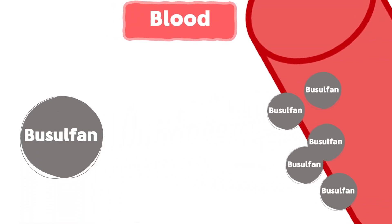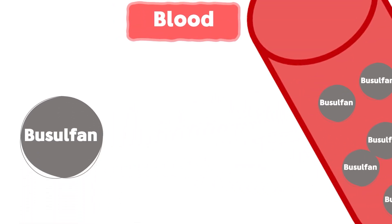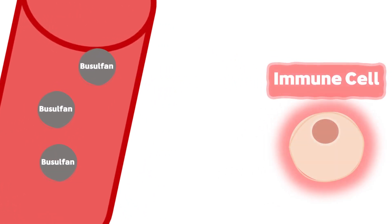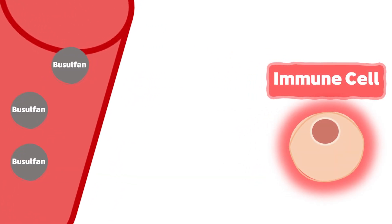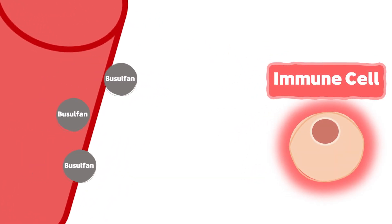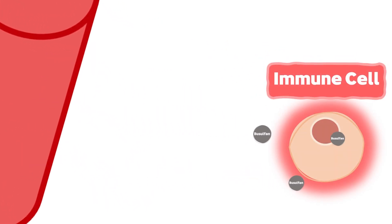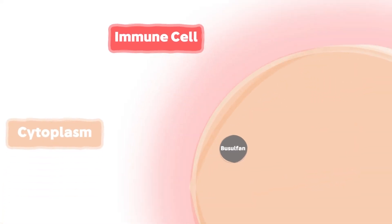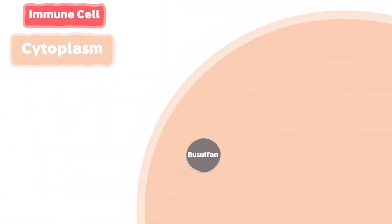After the administration of Busulfan to the patient's blood, Busulfan passively diffuses from the blood vessels to the cells. Inside the cells, Busulfan is hydrolyzed and activated.